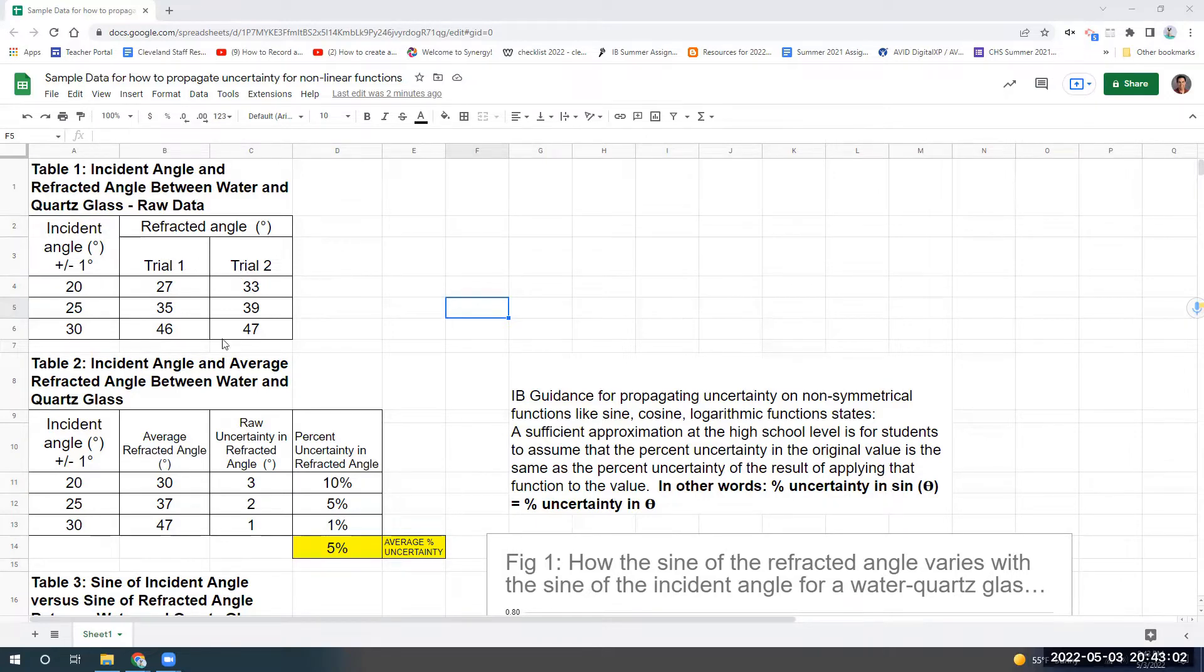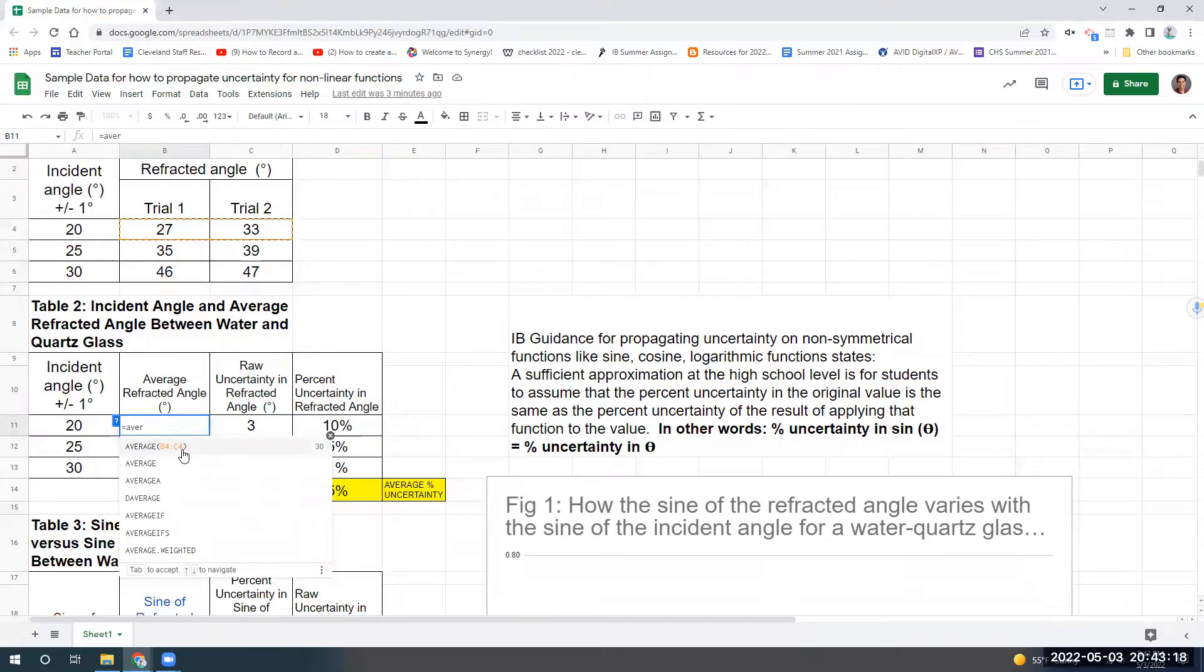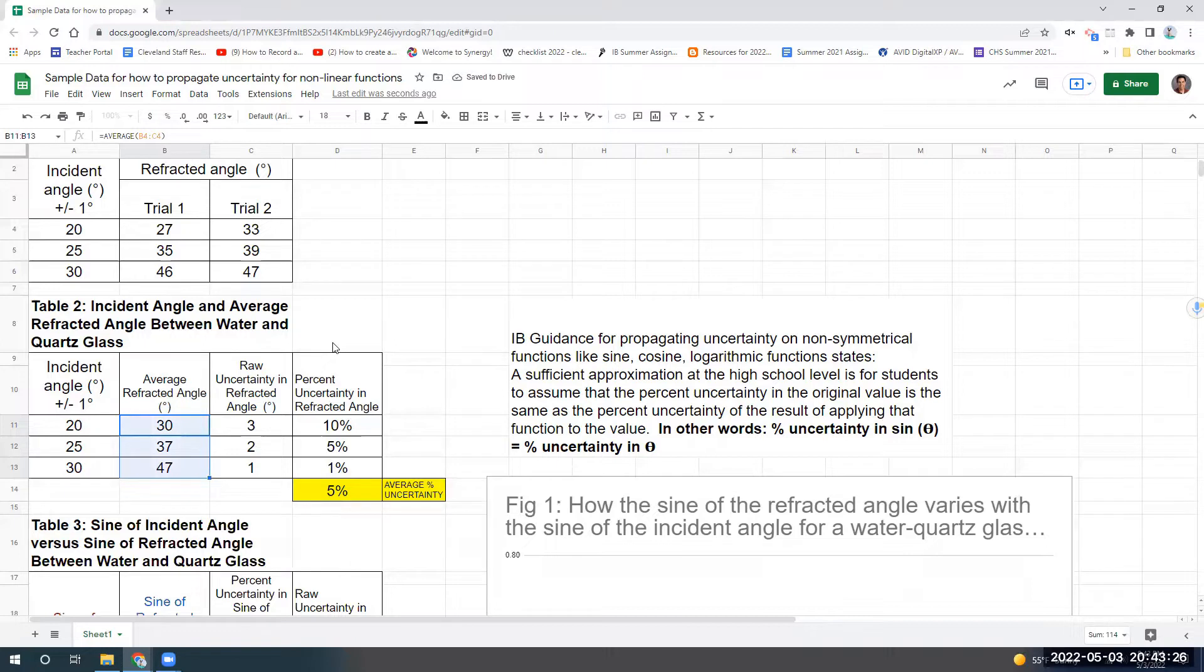So notice I have two trials here, so I'm going to get an average of those two trials by coming down here to table two. And by the way, I just want to emphasize that the way I did this and the way you want to try and do this is let the power of the spreadsheet work for you. So notice here, I'm going to use this average function to average the two, and then I can just spread that like we've talked about earlier in the year. Now, let's do the same thing over here for the raw uncertainty. Notice we're going to do the maximum number minus the minimum number divided by two. So for the first setting of 20 degree incident angle, we get a raw uncertainty of three. 33 minus 27 divided by two is three. Now, a helpful thing to do when you're going to propagate uncertainty through a non-symmetrical function is to make sure you get the percent uncertainty. So that's what I did here in this column. I just calculated the percent uncertainty for each of these trial settings and notice it's different.